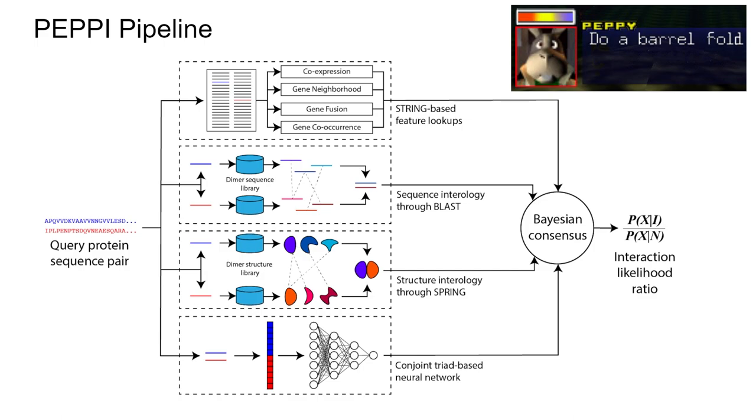My solution was the PEPPI pipeline, named after the Star Fox character Peppy Hare. The concept: take a protein sequence pair, classify it with independent modules. Each module gives a score that combines into a Bayesian consensus model, yielding the final interaction likelihood ratio.